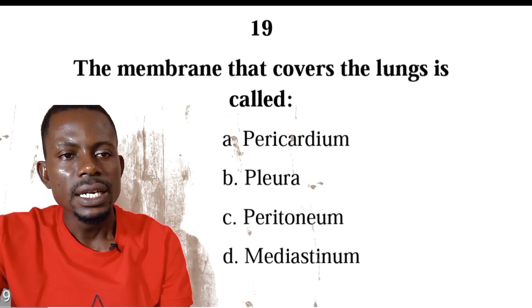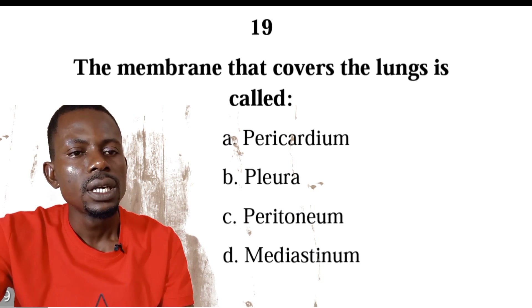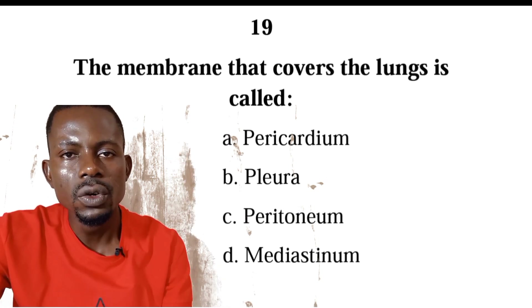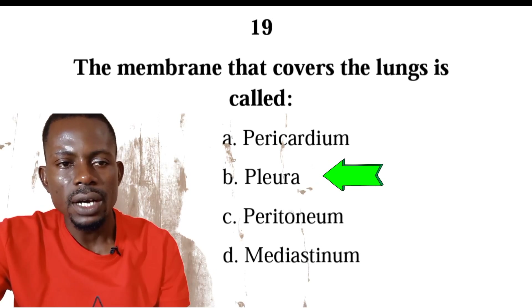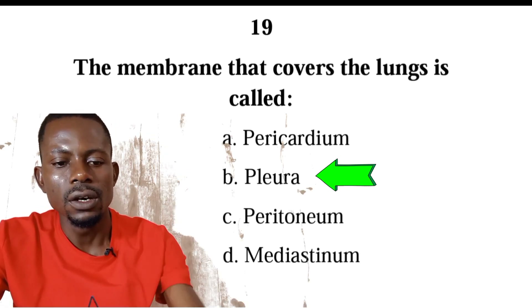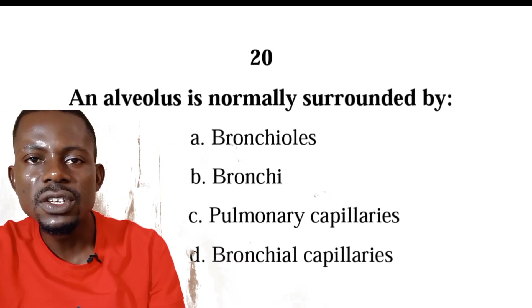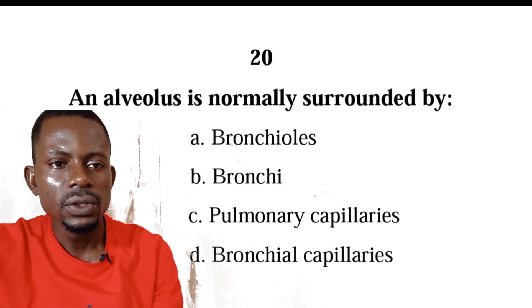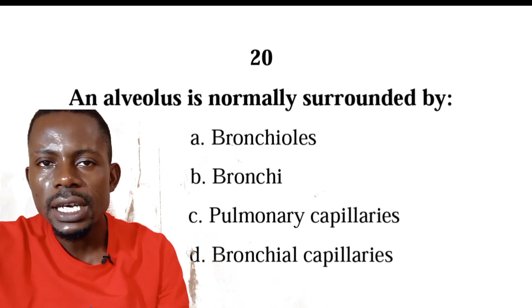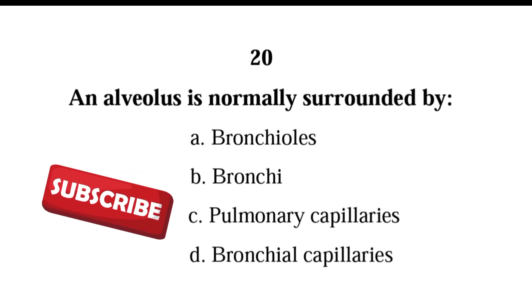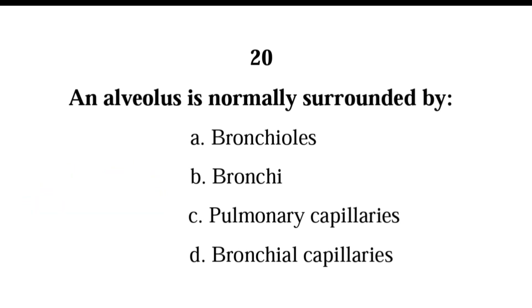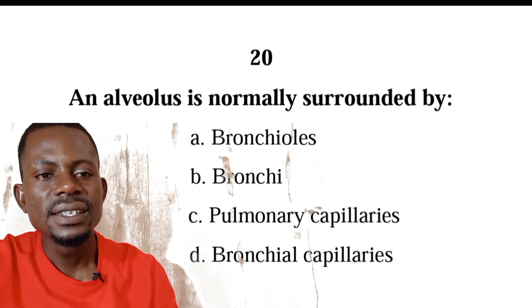Number nineteen: the membrane that covers the lungs is called — pulmonary artery, pleura, peritoneum, or mediastinum? The correct answer is B, pleura. The pleural membrane is a membrane that covers the lungs. Number twenty: an alveolus is normally surrounded by bronchioles, bronchi, pulmonary capillaries, or bronchial capillaries? The correct answer is C, pulmonary capillaries. Pulmonary capillaries are the tiny vessels that wrap around the alveoli and are responsible for gas exchange.